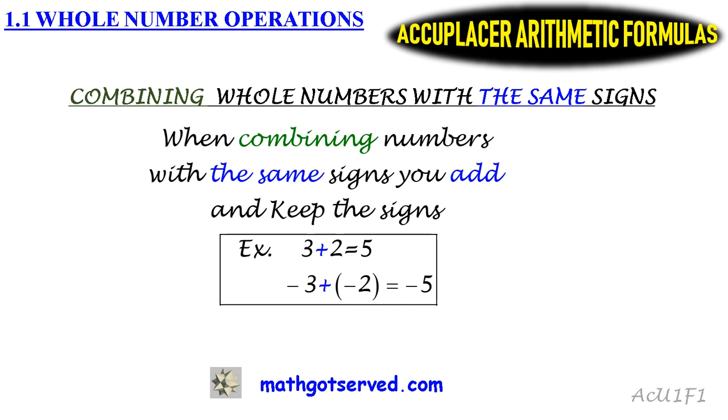When you're combining, this plus sign here basically indicates a combination operation. So when combining 3 and 2, you just add the numbers: 3 plus 2 which is 5. And since they're both positives, you retain that positivity and your final answer is positive 5.